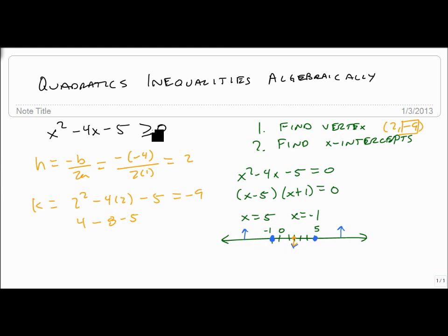It always alternates like this. And we want the one that's up, we want the positive one. So we shade here and we shade here, and our answer is, again, minus infinity to minus 1, union 5 to infinity. And we get our answer very quickly just by knowing the vertex and the x-intercepts.